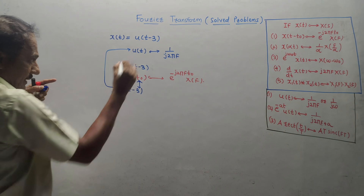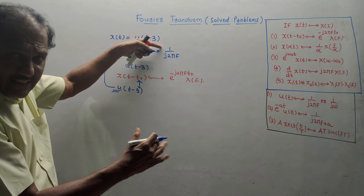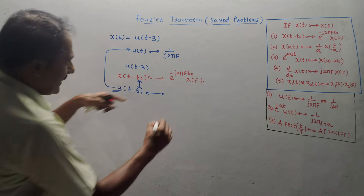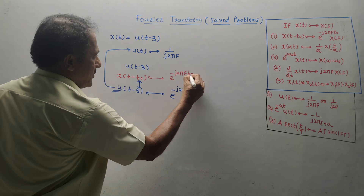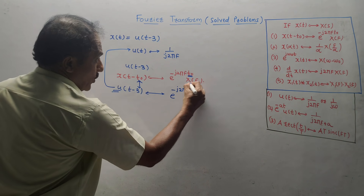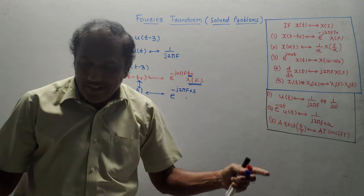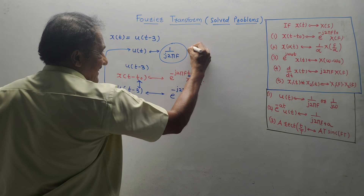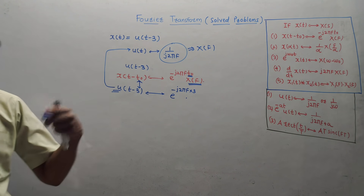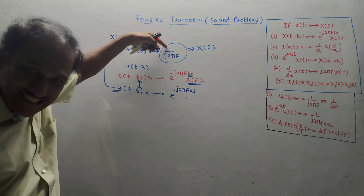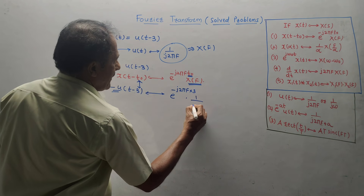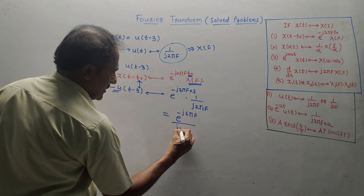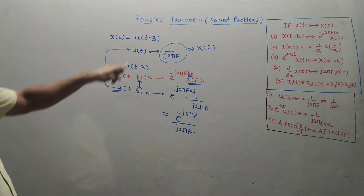The key concept: X(F) here is a notation. What to put in place of X(F) is the answer from the previous step — the standard signal's Fourier transform. So X(F) here is 1/(J2πF), which is the Fourier of U(T). Applying the property: the answer is E^(−J·2πF·3) · (1/(J2πF)), which simplifies to E^(−J6πF) / (J2πF). This is the Fourier transform of U(T − 3).